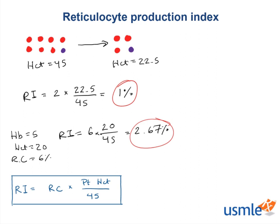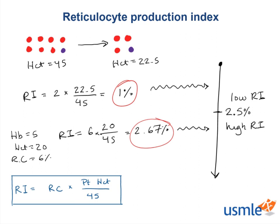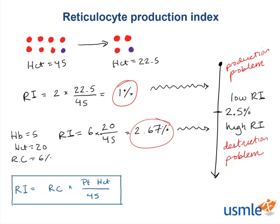So what does any of this actually mean? We look at these values of reticulocyte index and judge whether they're low or high, with the cutoff being 2.5%. Our first patient has a low RI, and our second patient has a high RI. A low RI means there's a production problem — the bone marrow is not producing enough red blood cells despite the anemia. A high RI means there's a destruction problem — the bone marrow is working but red blood cells are being destroyed.